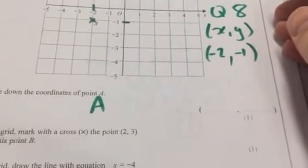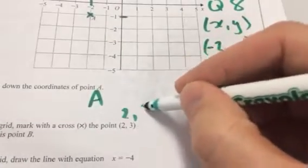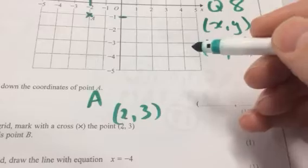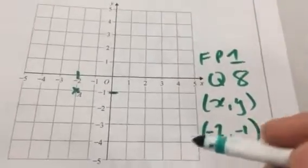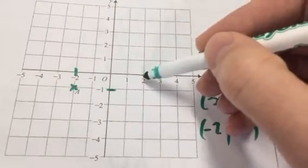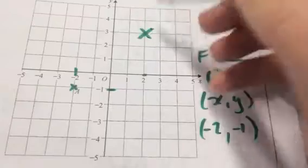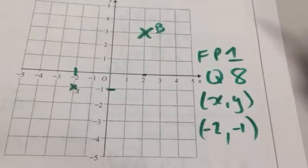So that's one mark. The next question asks us to mark with an x the point 2, 3 and label this point B. So we go back up here, go along the x-axis to 2, up to 3, and we mark that point B there.